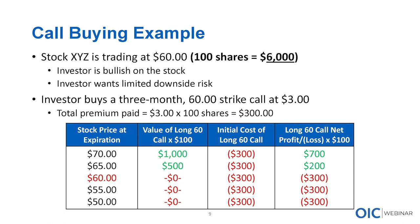Let's talk about a call buying example. Stock XYZ is trading $60 - 100 shares would be $6,000. The investor is bullish on the stock and wants limited downside risk. The investor will buy a three-month 60 strike call at $3. Total premium paid is $3 times the 100 multiplier, which gives you $300. That's how much money you're actually paying. Let's look at some of the P&L scenarios. Starting at 60 - at expiration, if the stock never moves and stays at $60, the value of your long 60 call is zero, because there's no advantage to exercising at the strike.